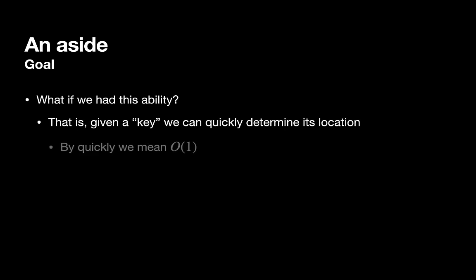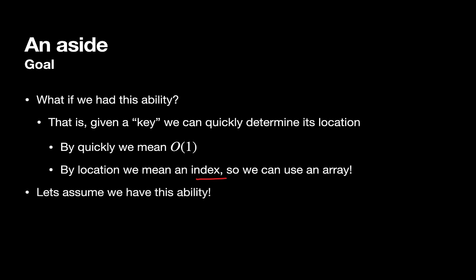And here by quick, we mean order one, because if this process of determining where something belongs is more than constant time, then our overall get or put of retrieving or putting the item away will be more than constant time. And by location, I specifically mean index in an array. So our first approach here will be to just use a simple array. And for the time being, we'll assume that we have this ability that given a key, we can determine its location. And we'll just look at some of the concerns that we run into. And then in later units, we will talk about the process of actually figuring out this location.